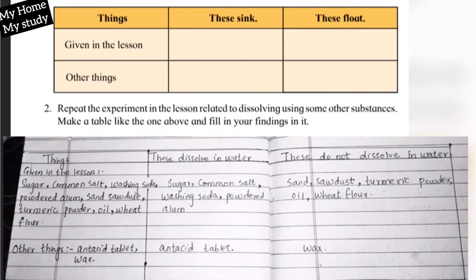Repeat the experiment in the lesson related to dissolving using some other substances. Make a table like the one above and fill in your findings in it. Things: In given in the lesson are sugar, common salt, washing soda, powdered alum, sand, sawdust, turmeric powder, oil, wheat flour. Alum powder is what we call fitkari powder. And other things include antacid tablet and wax.